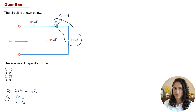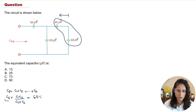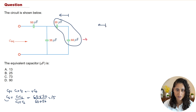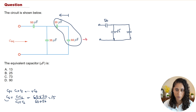We'll find the equivalent of the 60 and 20 µF series capacitors using the product-over-sum equation. So C-equivalent equals (60 × 20) / (60 + 20), which gives us 15 µF. Now we redraw the circuit with the new equivalent capacitor. We have 50 on one side, 35 on another, and this new 15 µF equivalent. You can clearly see that the 35 and 15 are now in parallel.